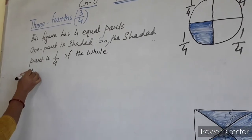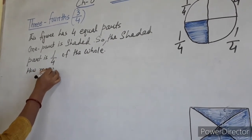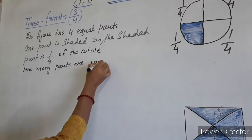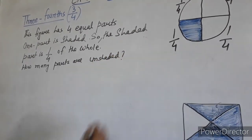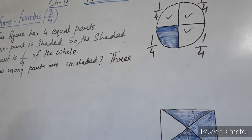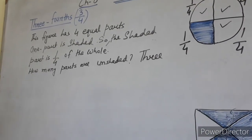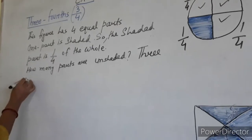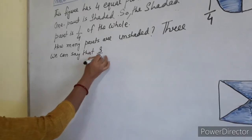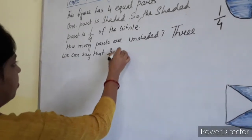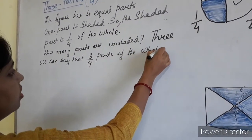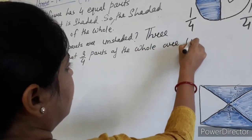Now you have to find how many parts are unshaded. How many parts are unshaded? 1, 2, 3. So 3 parts. 3 parts are unshaded. So we can say that 3 by 4th of the whole are unshaded.